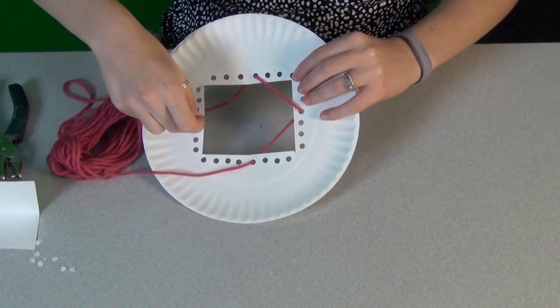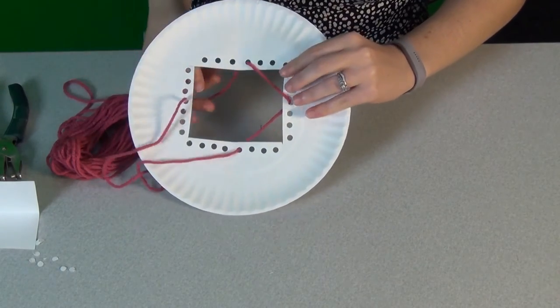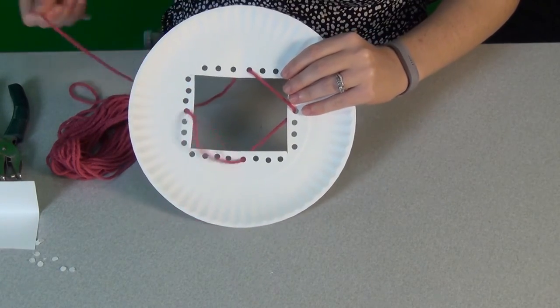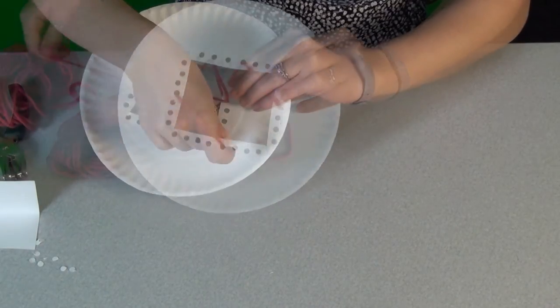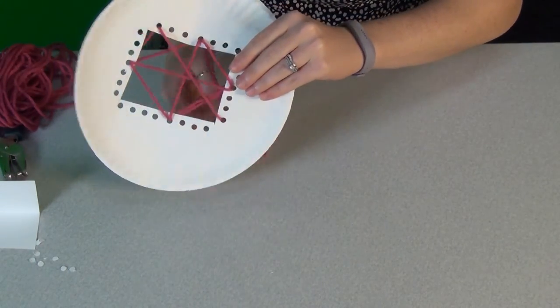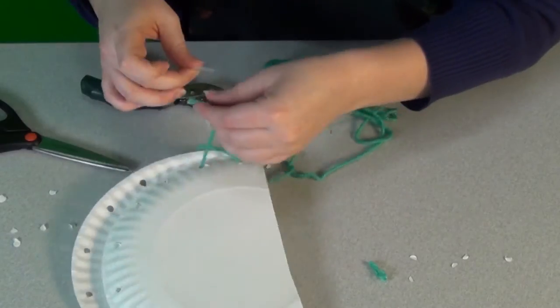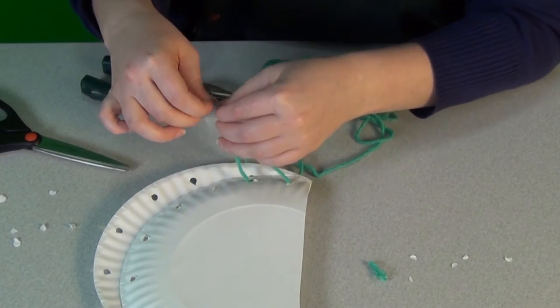To play, have your child thread yarn through the punched holes to create designs, shapes, and letters. When they are done with one piece of art, they can unthread the plate and start all over again. Don't forget to wrap the ends of the yarn in tape to make threading easier for your child.